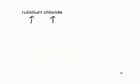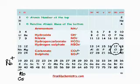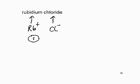Rubidium would have a plus charge. The other ion is chloride. Chlorine is found in group 7. So we have Rb⁺ as a positive charge and chloride as a minus charge. We have a positive ion and a negative ion — that balances. So the formula of rubidium chloride is RbCl.